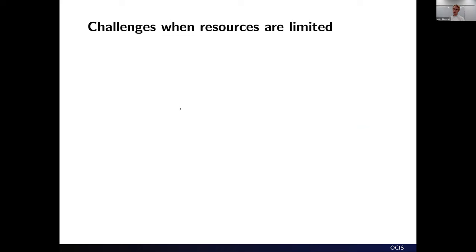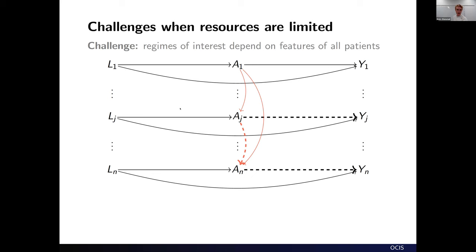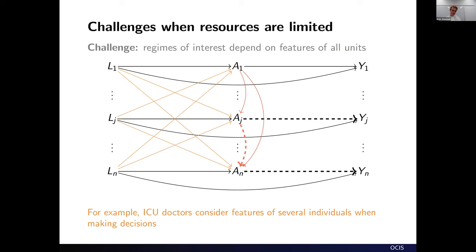When resources are limited and we are interested in causal effects, there are a few challenges. A common feature of these three settings is that when we decide on a treatment regime — for example, giving a patient an ICU bed — that bed is no longer available for the next patient. So whatever treatment decision we make for one patient may affect the treatment available to the next patient, which in turn may affect their outcomes. There are dependencies between units, at least under the regimes we want to study.